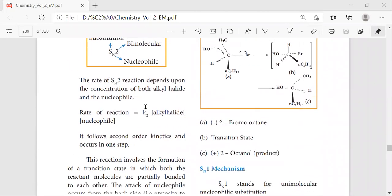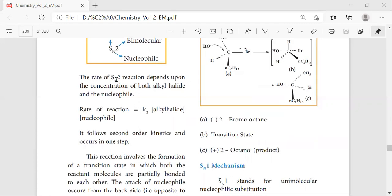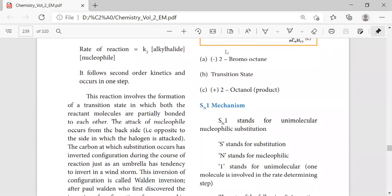The rate of this SN2 reaction depends upon the concentration of both alkyl halide and the nucleophile. The rate of the reaction will be equal to k2 times the alkyl halide concentration times the nucleophile concentration. The 2 refers to the order - first order, second order.